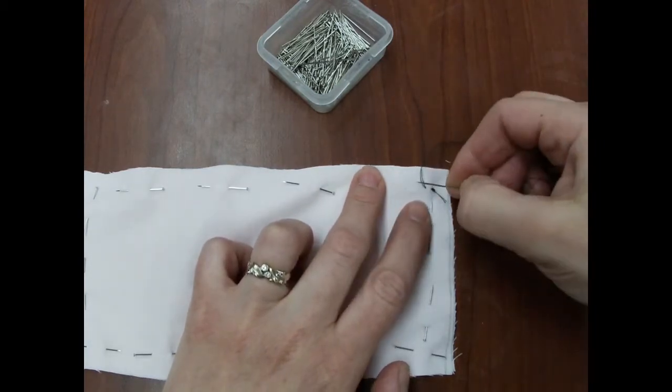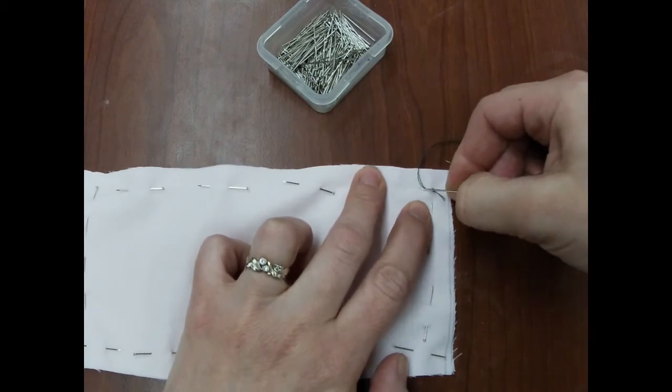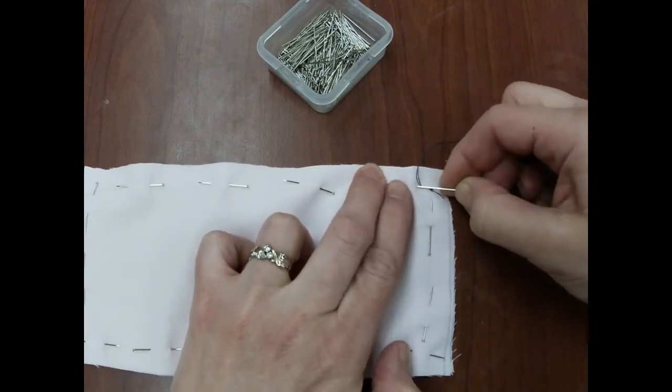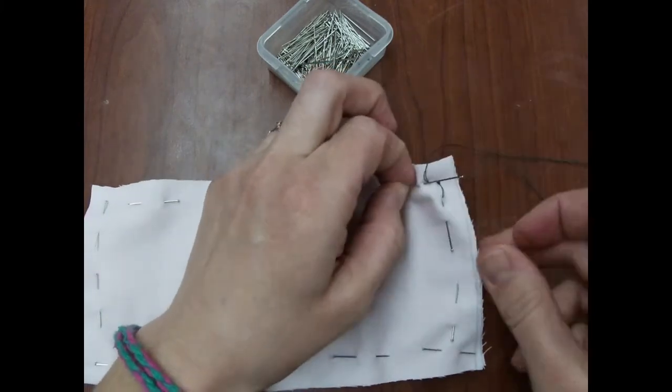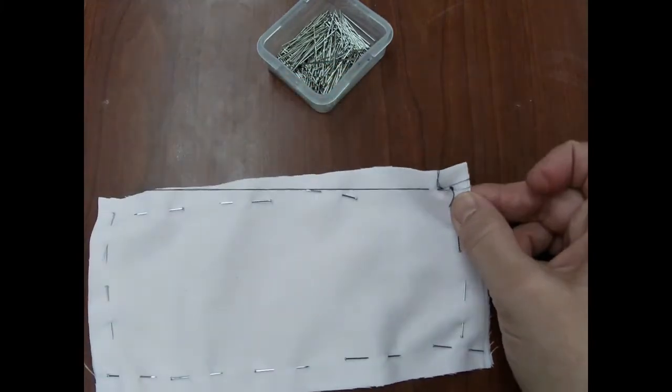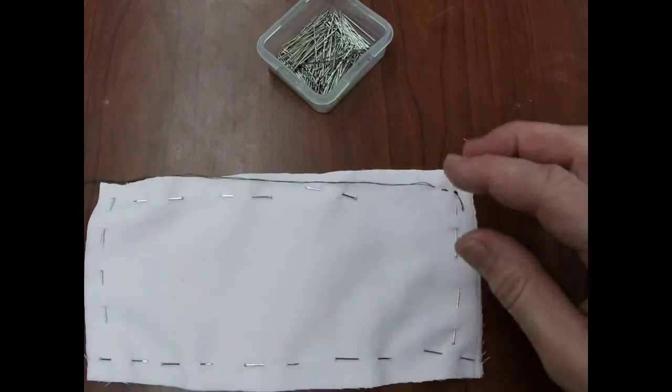Then you do your next stitch. Small stitches. Down, through both, and back up. That is how you create a straight stitch.